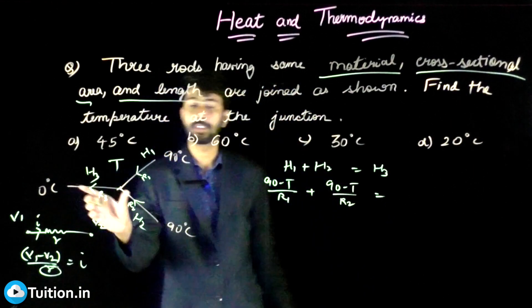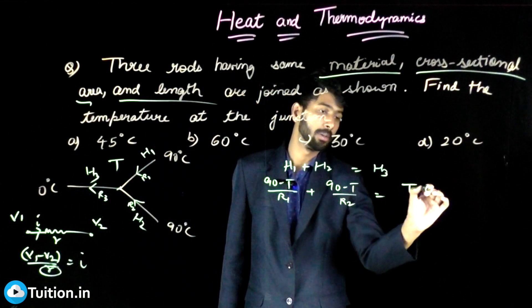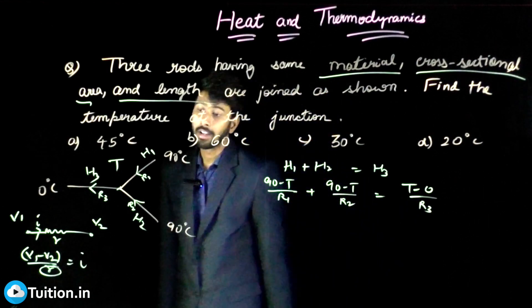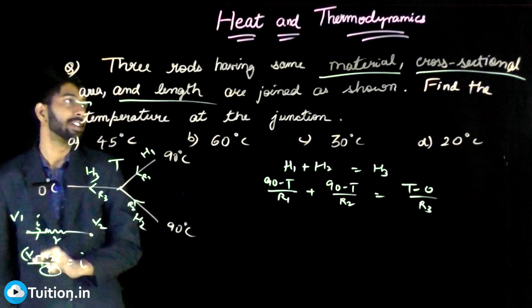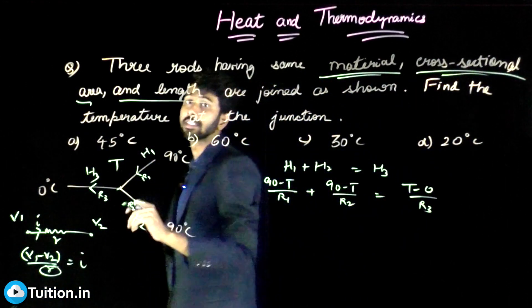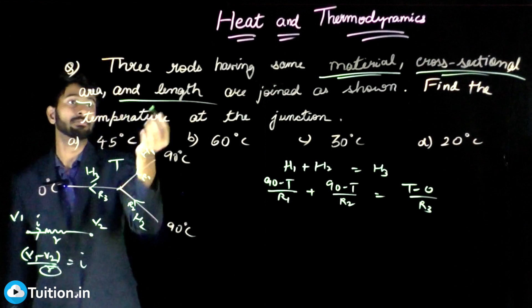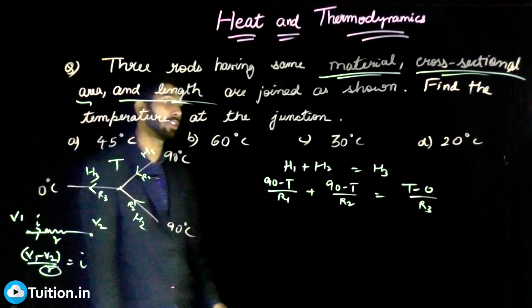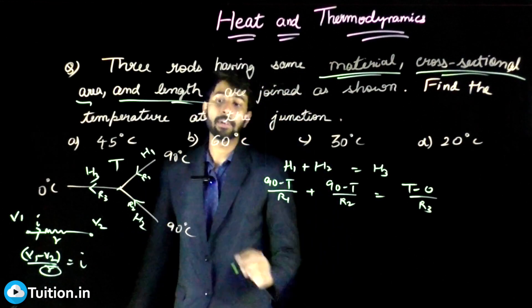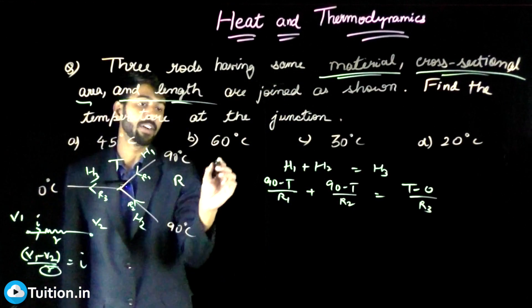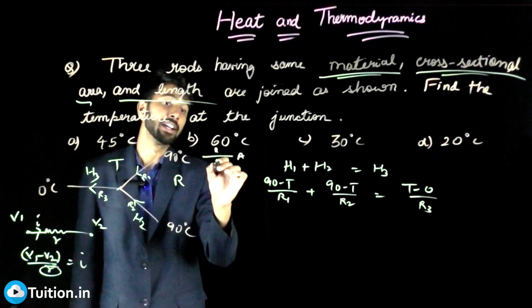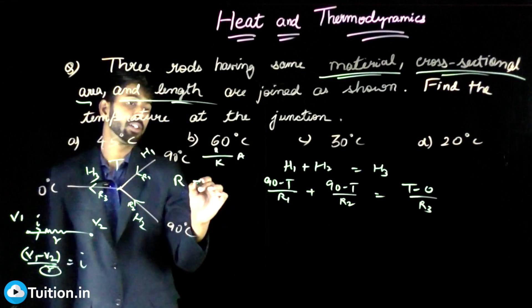Now, because all three rods are having the same material, the same cross-sectional area, and the same length, their R's will be same. Why? Because R is nothing but, if I have a rod of length L, cross-sectional area A, conductivity K, then R is equal to L by K times A.